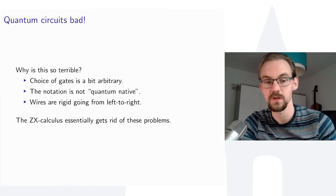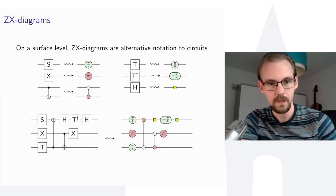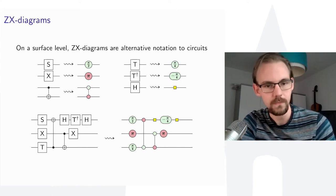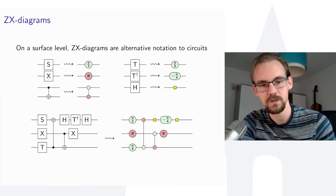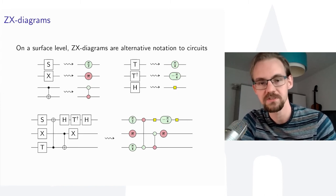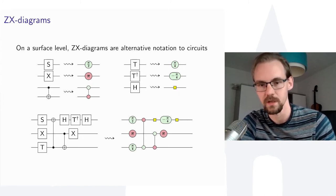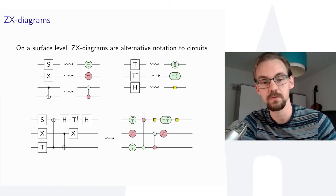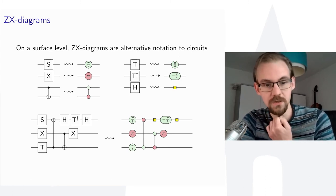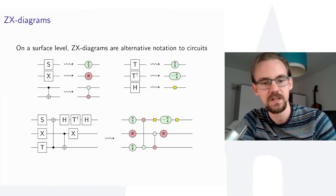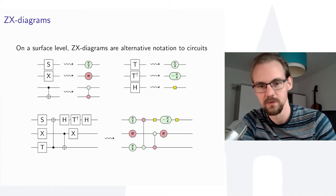The ZX calculus essentially gets rid of these problems. On the surface level, we can translate a circuit into a ZX diagram gate by gate. For instance, an S gate is a Z-rotation, represented by a green dot with phase π/2. A T gate is also a Z-rotation, represented by a green dot with phase π/4. The X gate — a rotation about the X-axis of the Bloch sphere — is written in red. The CNOT is described by a particular ZX structure, and there is a special notation for the Hadamard.